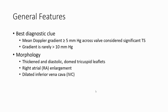The morphology of tricuspid stenosis includes thickened leaflets in systole, diastolic doming of the tricuspid leaflets, right atrial enlargement, and a dilated inferior vena cava.